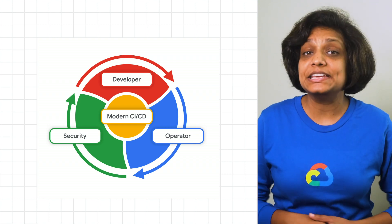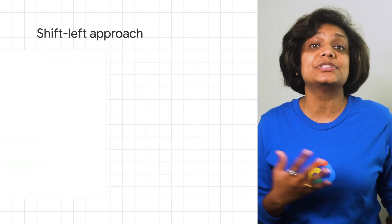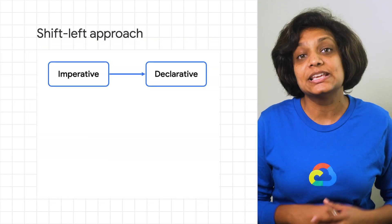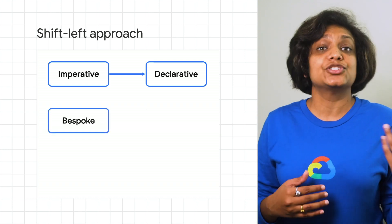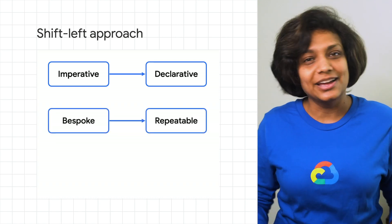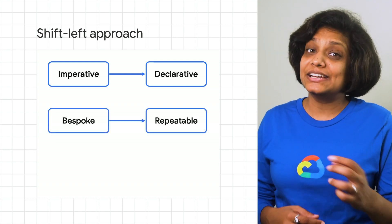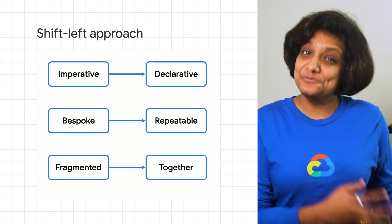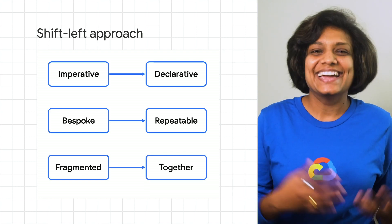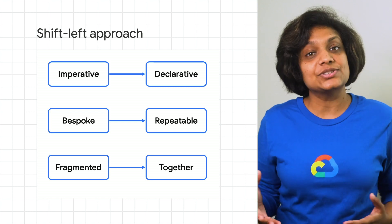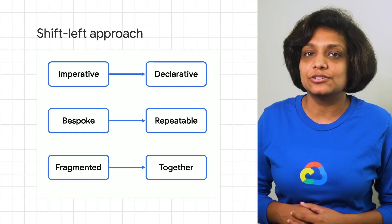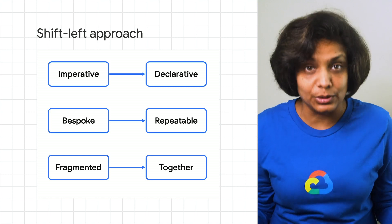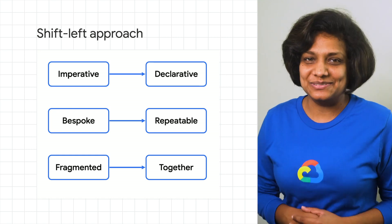Modern CI-CD on Anthos embraces a shift-left approach to development and leverages declarative templates to manage security policy, not people. This means that issues are addressed during the build and test phase, not in production. It allows you to bring your operations teams together, cutting down on silos and the proliferation of tools. So let's dive in.